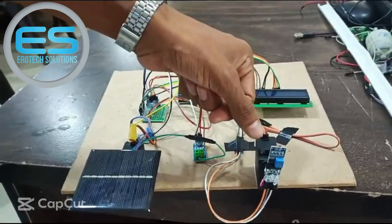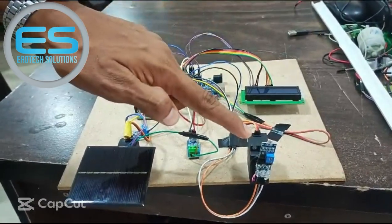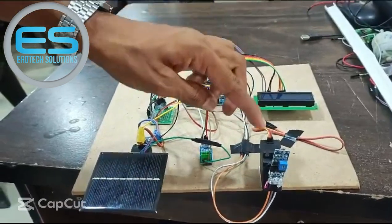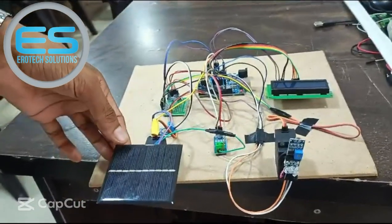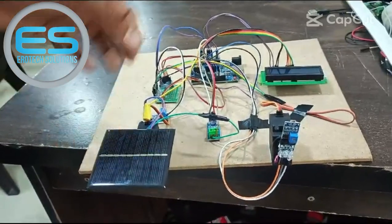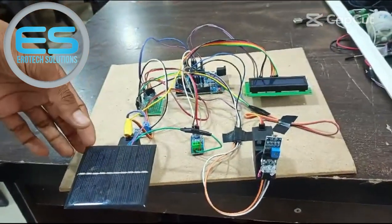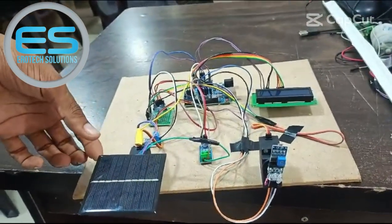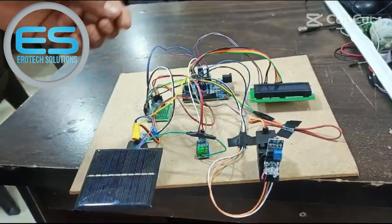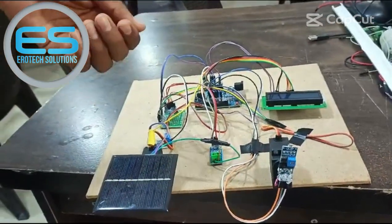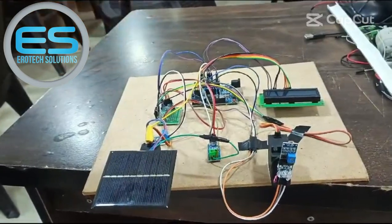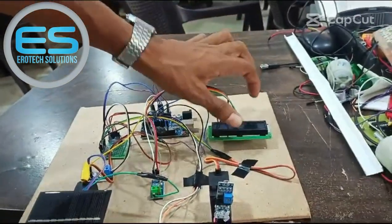The servo motor rotates until the LDR sensor gets high. Wherever the LDR position is getting high, the panel will be tilted to that position, thereby the solar panel gains maximum voltage. The raw voltage is converted to actual voltage and current, and the actual voltage, current, and power will be displayed on the 16x2 LCD display.